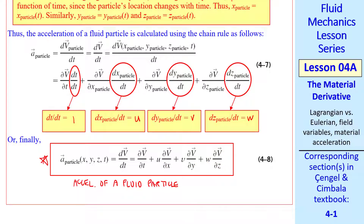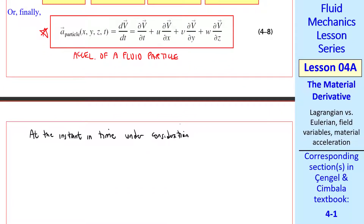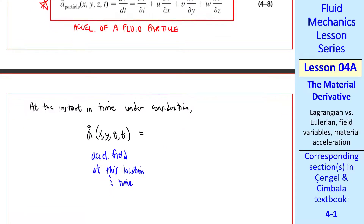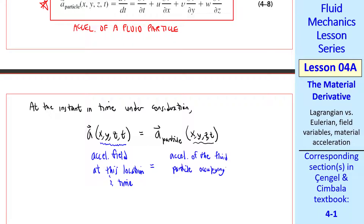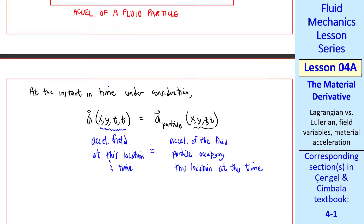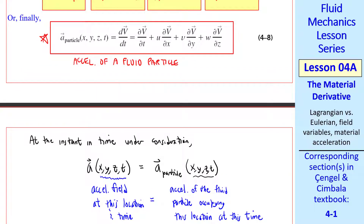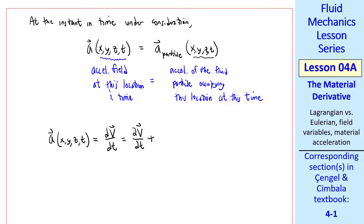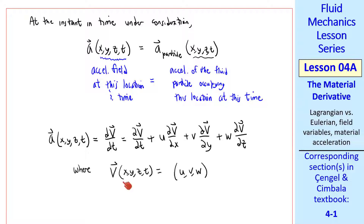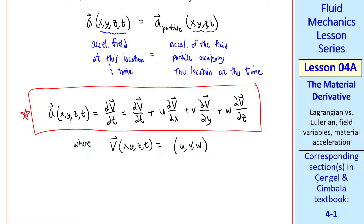This is the expression for the acceleration of a fluid particle. At the instant in time under consideration, the acceleration field at location x, y, z, and t equals the acceleration of the particle at that same x, y, z, and t — where the right-hand side is the acceleration of the fluid particle that happens to be occupying this location at this time. So using our equation, we can write an expression for the acceleration field: a equals Dv/Dt, or ∂v/∂t plus u(∂v/∂x) plus v(∂v/∂y) plus w(∂v/∂z), where velocity components u, v, and w are functions of space and time. We have achieved our goal of writing the acceleration field as a function of x, y, z, and t — an Eulerian description.